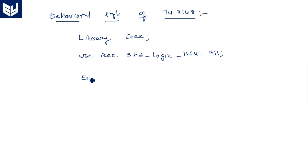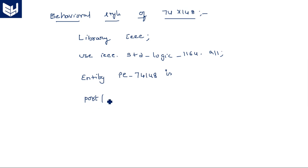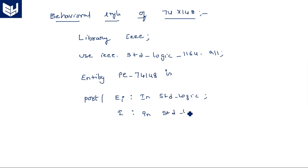Library IEEE; use IEEE.std_logic_1164.all; — this is the package. Entity priority_encoder_74148 is port. For the IC 74148, the inputs are: enable input EI, which is a single bit std_logic; and I, the input, which is std_logic_vector of size eight bits — seven downto zero.